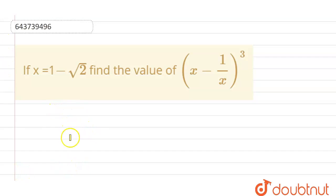We have the question in which x is equal to 1 minus root 2. Then find the value of x minus 1 divided by x, the whole cube. So we will calculate x minus 1 divided by x first.